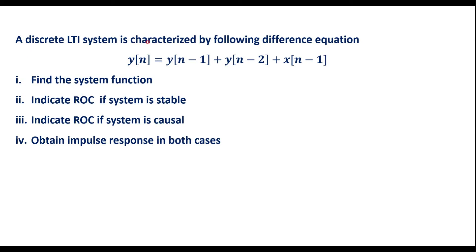A discrete LTI system is characterized by the following difference equation: y(n) = y(n-1) + y(n-2) + x(n-1). We are supposed to find the system function of this difference equation, indicate the ROC if the system is stable, check whether the system is stable, check for causality, find the ROC, and obtain the impulse response in both cases.